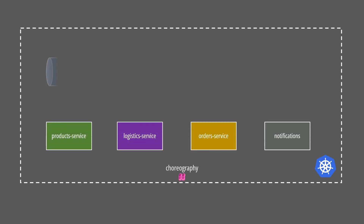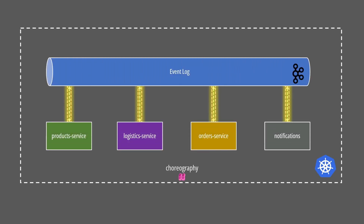Another approach is to use choreography. In this case, we remove the central point of control and let services react to events or signals. This approach favors greater independence of each microservice. However, it's more difficult to visualize the flow of data and understand the effect of failures in the system, because there isn't an explicit relationship between the different components.